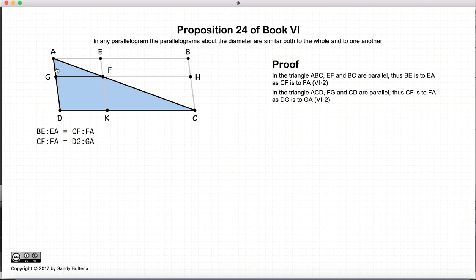And we do the same thing if we look at this triangle ADC. Now GF and DC are also parallel, which means that CF to FA is equal to DG to DA. And therefore, if we look at this, we can see that BE to EA is equal to CF to FA. So these two are the same, which gives us that BE to EA is equal to DG to GA.